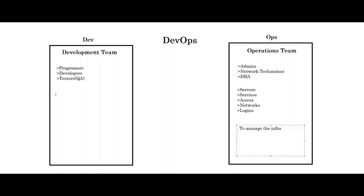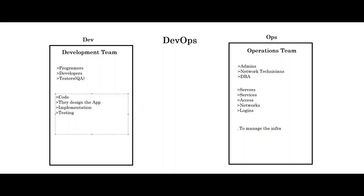Now what's the task of the development team? The development team writes code, designs the app, handles implementation, testing, and delivery of code. So these are the major tasks of the development team.